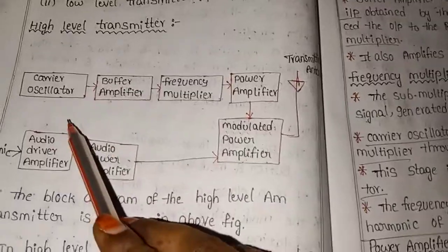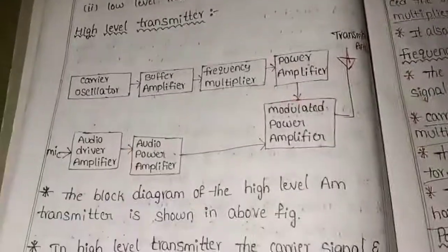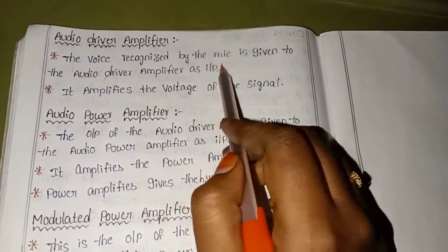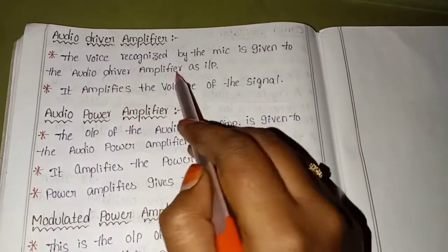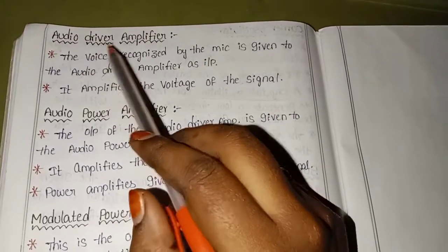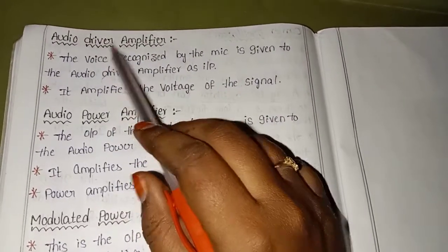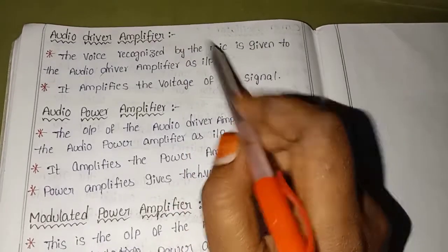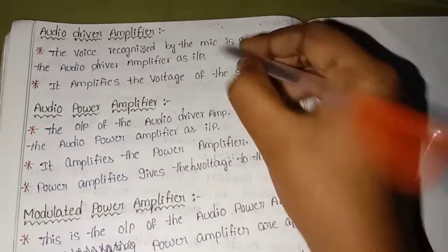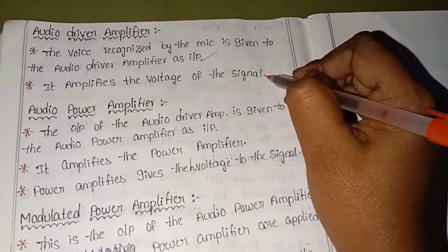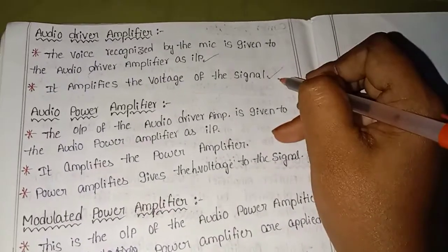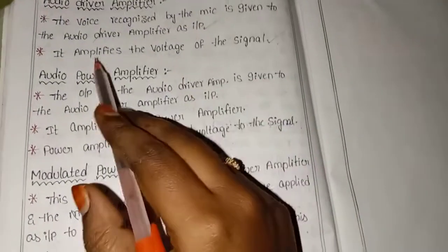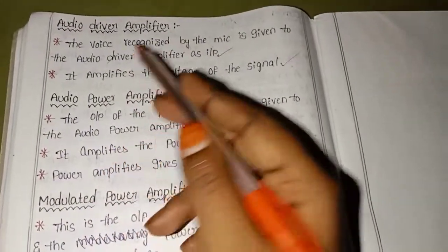The next section is the audio driver amplifier. The voice recognized by the mic is given to the audio driver amplifier as input. It amplifies the voltage of the signal — this is the working of the audio driver amplifier.